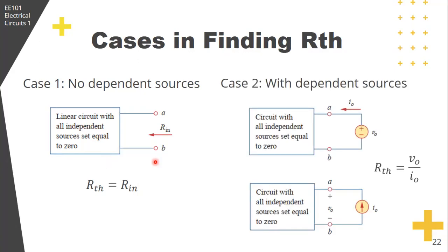Second case is if there are dependent sources in the circuit. In that case, we still turn off all independent sources but not the dependent sources, because they are controlled by circuit variables.